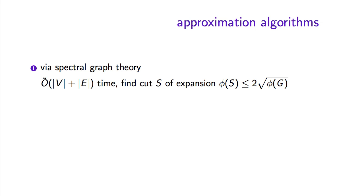What kind of approximation algorithms will we see? For the problem of finding the cut with the least expansion, we will see an algorithm using spectral graph theory — solving graph problems using linear algebra — that has a particular approximation guarantee. If the optimum is small, the algorithm finds in nearly linear time a solution whose cost is small. However, there is no constant factor or even O(log n) ratio between the solution and the optimum — it is essentially a square root of opt approximation.